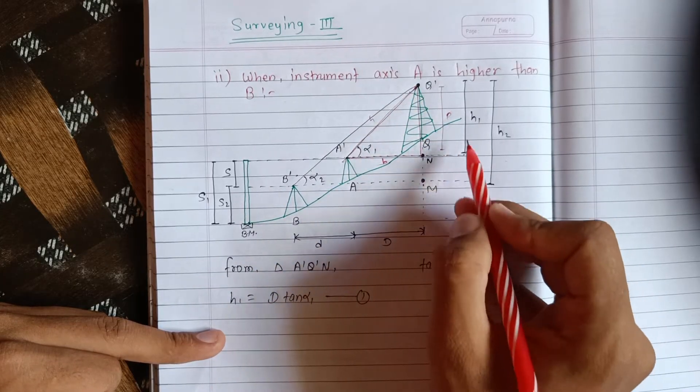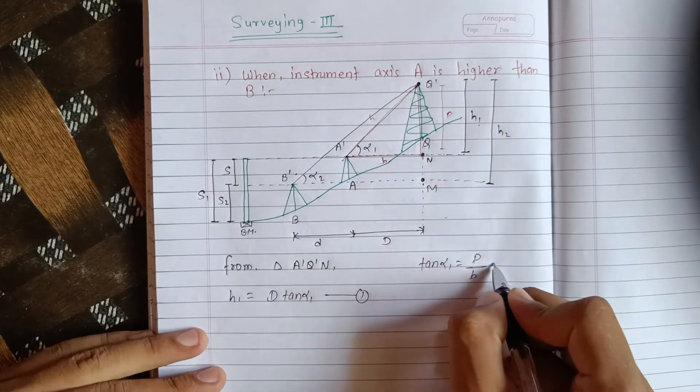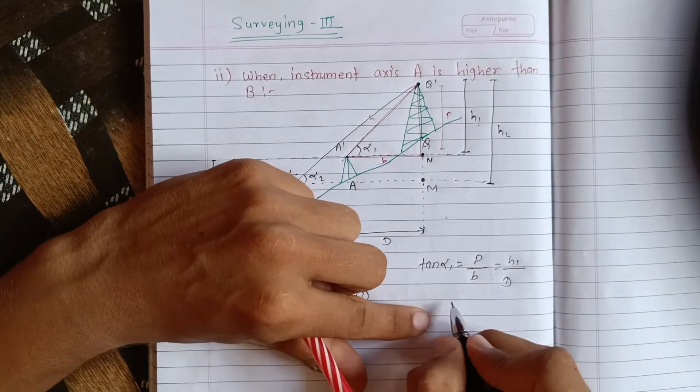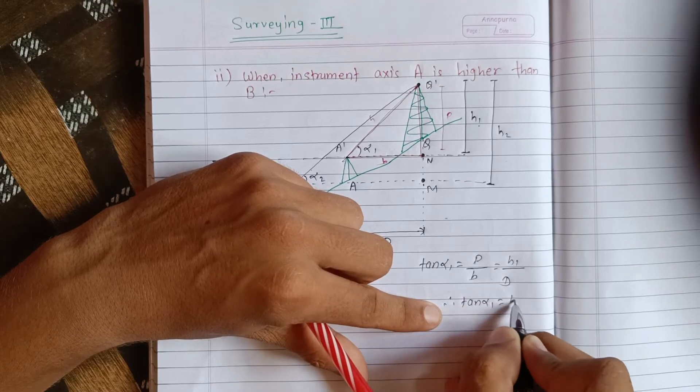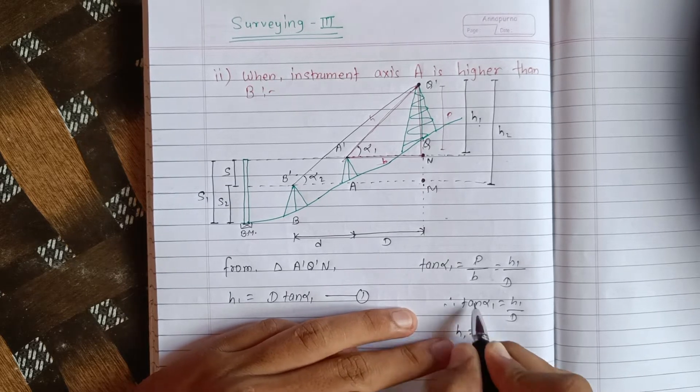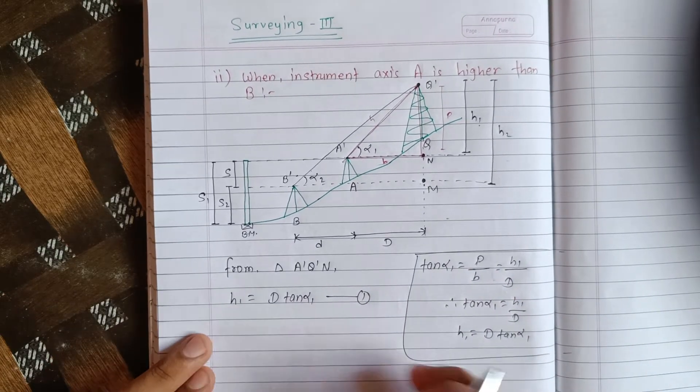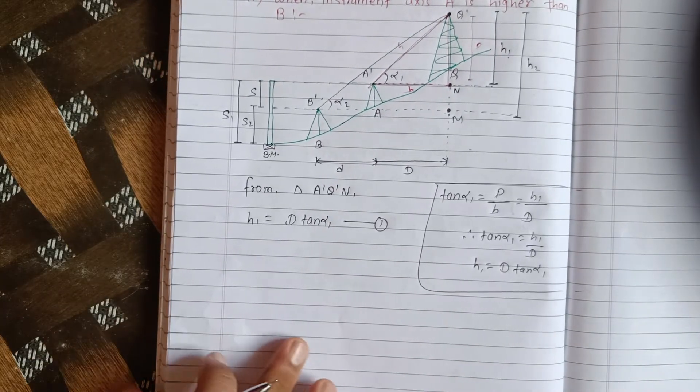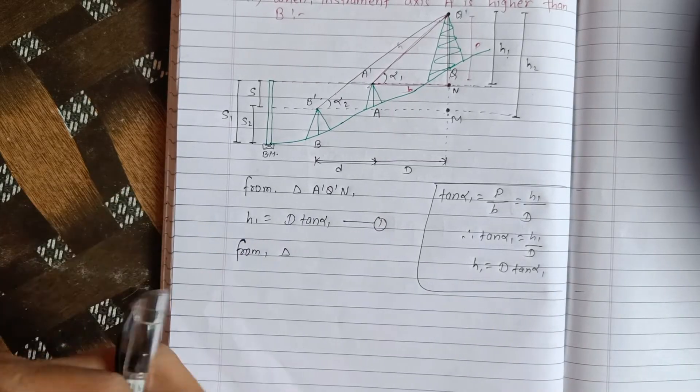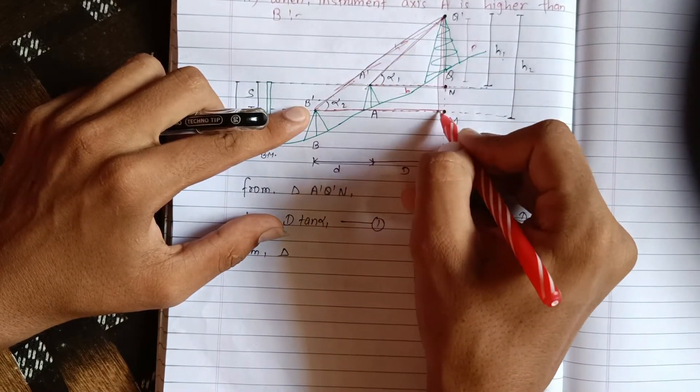Now S upon D when cross-multiplied gives us D tan alpha 1. Similarly, from the second triangle, we need to establish the same relationship for S2.